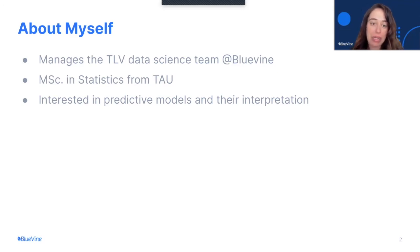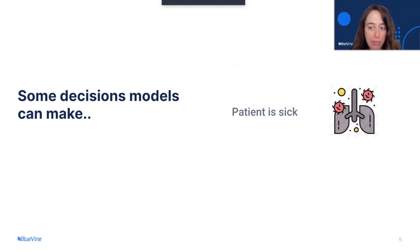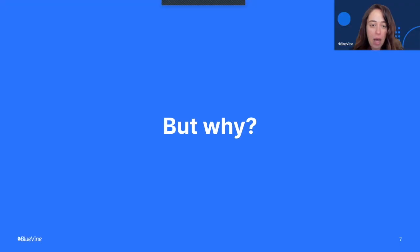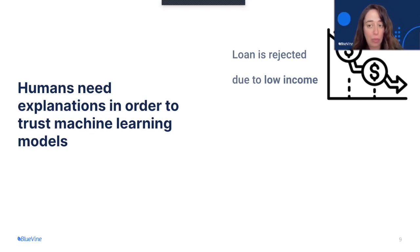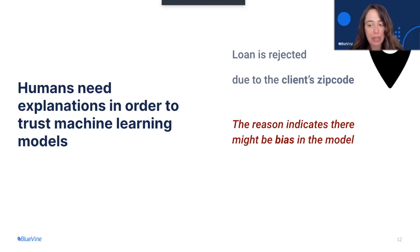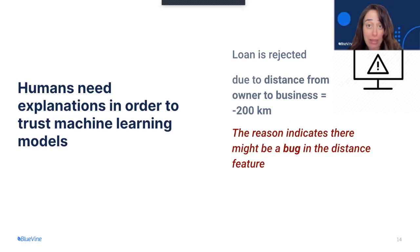I have a master's degree in statistics from Tel Aviv University, and I'm interested in predictive models and their interpretation. Some decisions models can make: a loan is rejected, a patient is sick, and a suspect is guilty. But why were these decisions made? Humans need explanations in order to trust machine learning models. For example, if a loan is rejected due to low income, this reason makes sense. But if a loan is rejected due to the client's zip code, this might indicate bias in the model. And if a loan is rejected due to the distance from the owner to the business being minus 200 kilometers, this indicates there might be a bug in the distance feature.